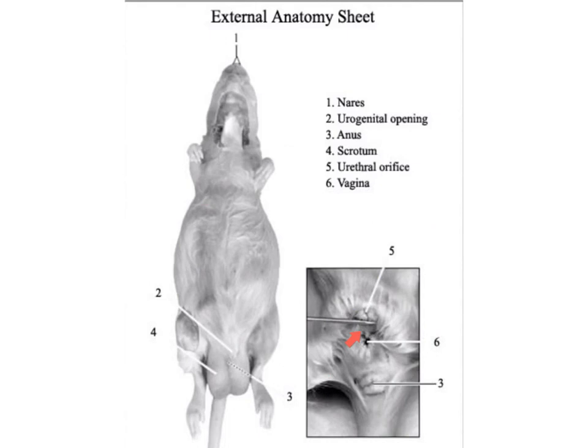In the male, the reproductive and urinary products both exit through the tip of the penis, which is usually hidden inside a fold of skin. The testes are housed in the large pouch called the scrotum. During breeding season the testes would be enlarged, and outside breeding season they would be smaller.